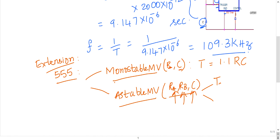But let us see it in a different way. It can be split into time for charging and time for discharging. Time for charging is given by 0.693 into (Ra plus Rb) into C.